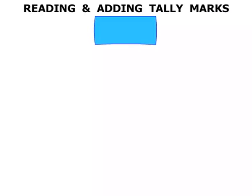In this lesson we do some work on reading and adding tally marks. Now what is a tally mark? Basically it's a group of five. One, two, three, four, and the fifth stroke goes across. So when we see that, that is worth five.